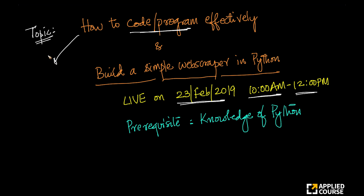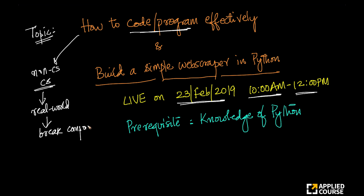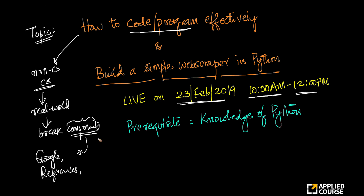Something that we notice amongst our students, especially those who come from non-CS backgrounds — and even students who come from CS backgrounds — is that given a real world problem, they are not able to break it down into smaller components and find and write the appropriate code for each of these components using multiple resources: their basic understanding of Python, Google search effectively, publicly available resources like function references, Stack Overflow and other resources on the internet.